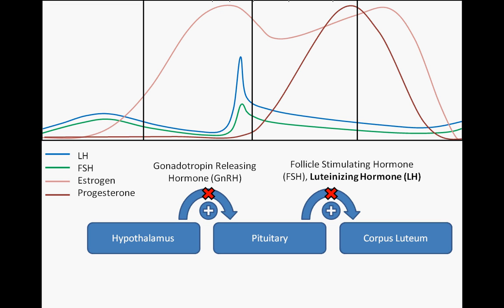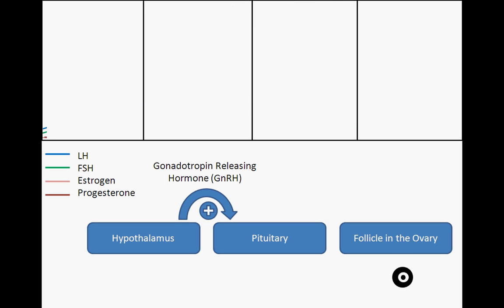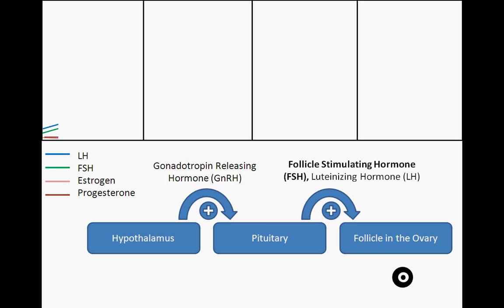In the case of pregnancy, this shedding is prevented by continuously high levels of estrogen and progesterone, maintained by hormonal signals from the developing embryo and the placenta that supports it. However, in the absence of fertilization and embryo formation, falling levels of estrogen and progesterone result in the removal of hypothalamus and pituitary inhibition. As a result, production of FSH and LH begins to rise, enabling the initiation of another round of follicular development and the start of yet another monthly cycle.